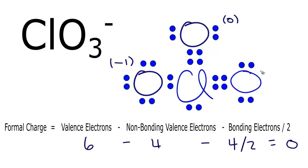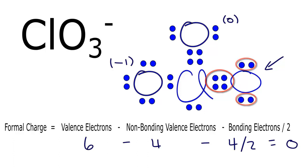For the next oxygen, we can see it has the same orientation as the previous one — it has a double bond and four non-bonding valence electrons around it. So we don't need to calculate this again; the formal charge is zero.